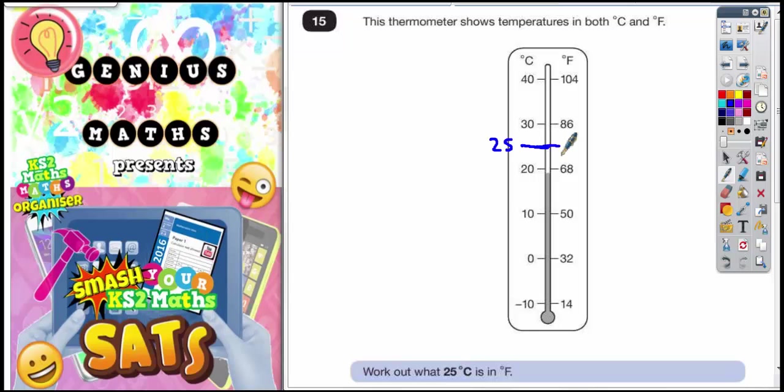But we've got to do the same on the other side. Now this is not so easy because we're going to go halfway between 86 and 68. If we can work out halfway between 86 and 68, we'll have the rough conversion from 25 degrees C to whatever that is in Fahrenheit.